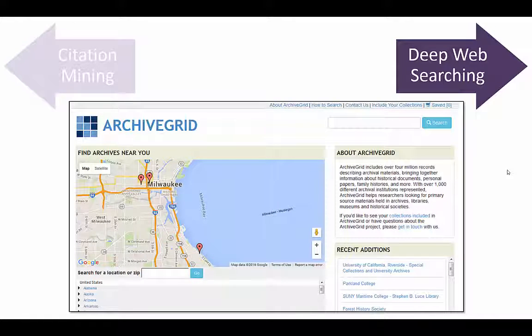You can also use Archive Grid to find other archival collections near a particular location.